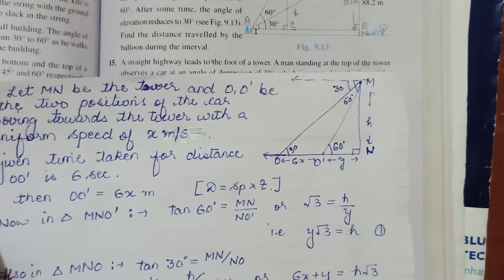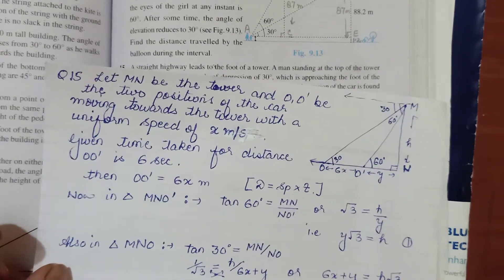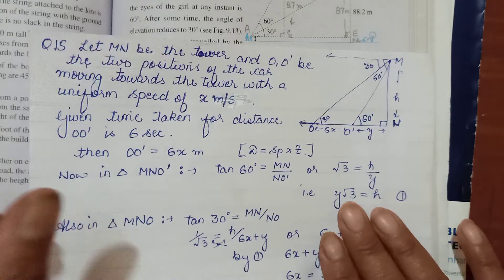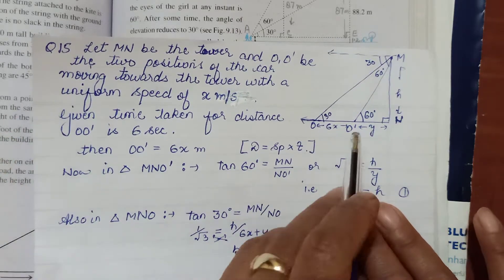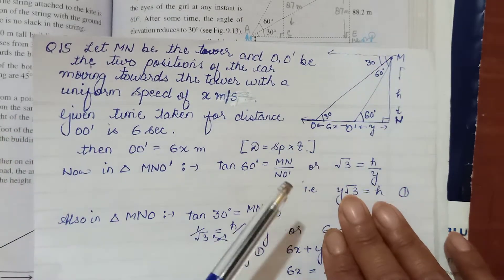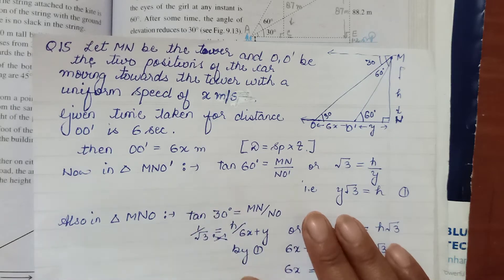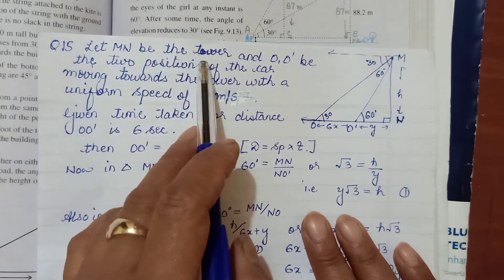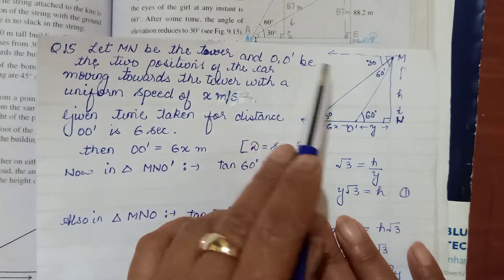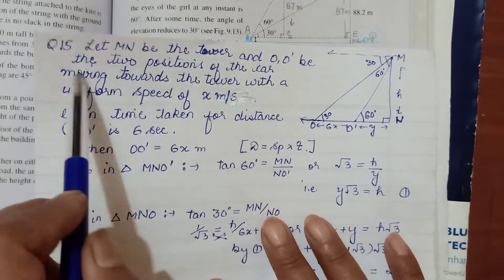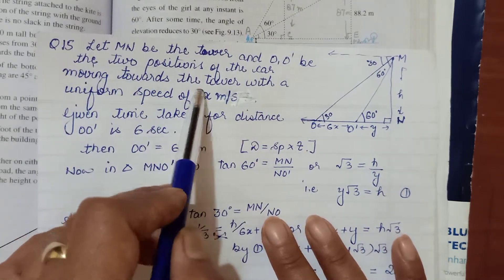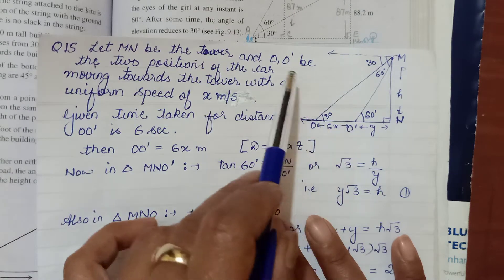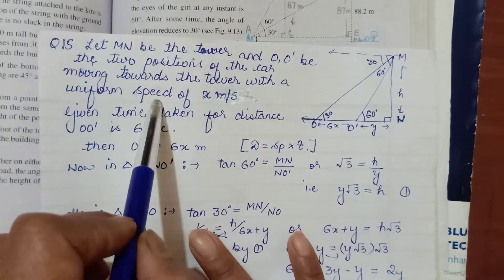So we will start by assuming the uniform speed here. Because we have speed given and time given, and what we are showing in the figure is the distance. So let MN be the tower and O and O' be the two positions of the car moving towards the tower. So first it was O and now it has reached O' with a uniform speed.